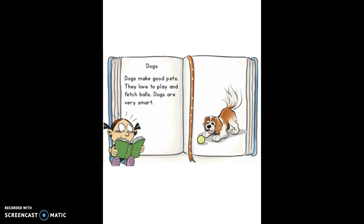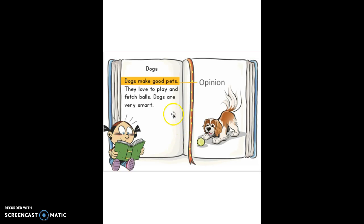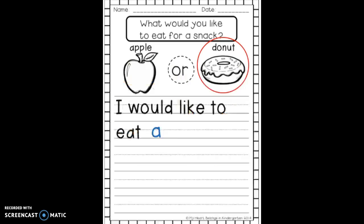Now let's look at this little excerpt — you probably have this benchmark lesson with your teacher, but I wanted to review a few important points from it. This first sentence about dogs says, 'Dogs make good pets.' That's an opinion statement, so I need to come up with my statement about the donut.